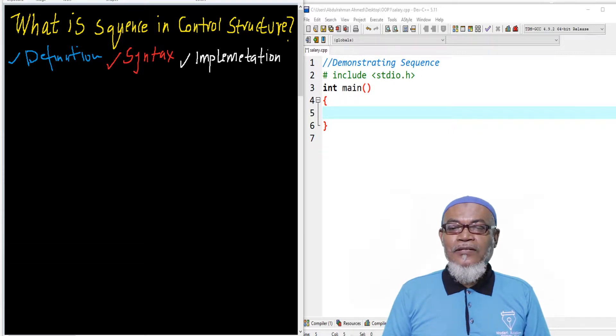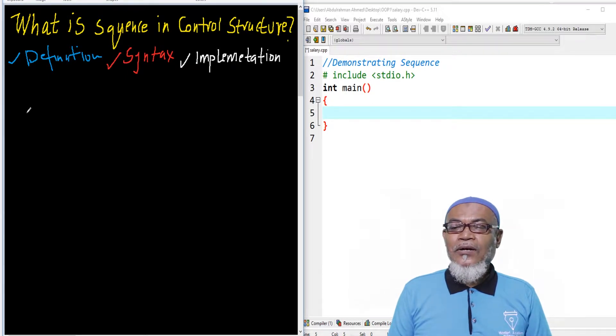So basically, let's start with what is a sequence. We find out that a sequence consists of statements which are executed in specified order. Here, the order is actually very important. That is one of its characteristics.